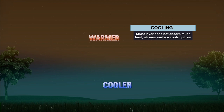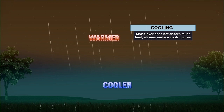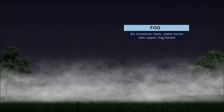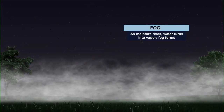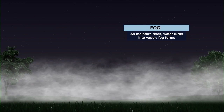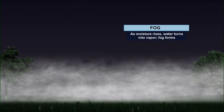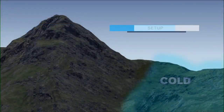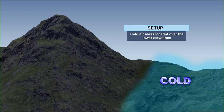Then you have cooling. The moist layer does not absorb much heat, and the air near the surface cools much quicker. Voilà — as moisture rises, water turns into vapor and the fog forms. Remember, fog is just a big cloud at the ground basically.